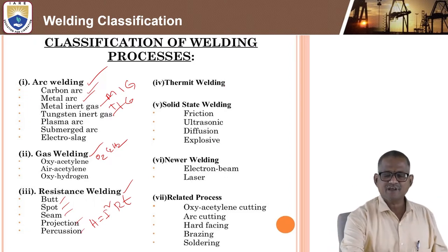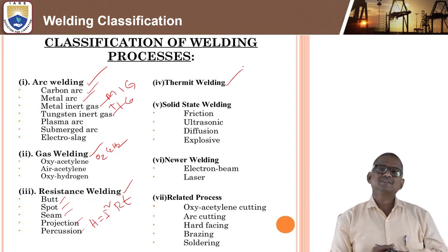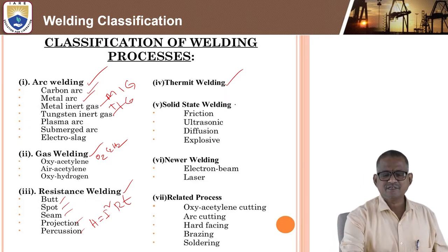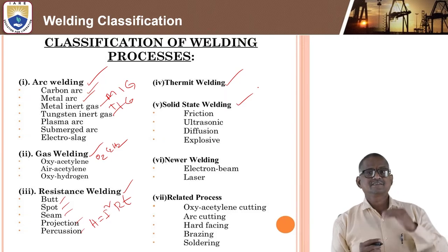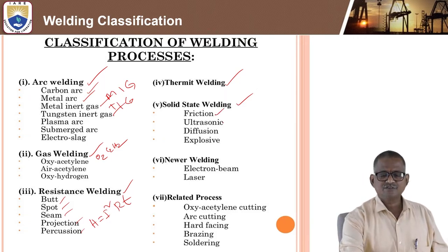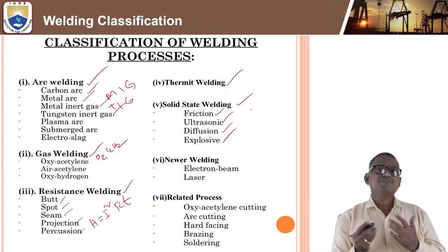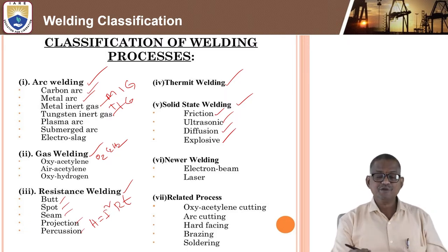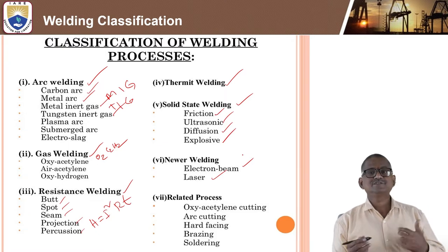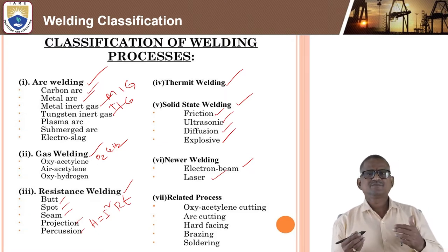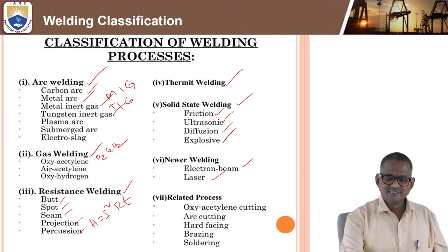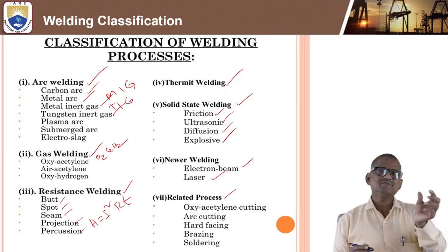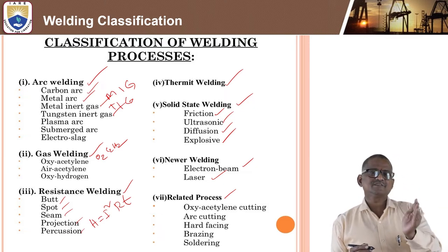Thermite welding is especially used for railway applications. Solid state welding is subdivided into friction welding, ultrasonic welding, diffusion welding, and explosive welding. Advanced welding processes include electron beam welding and laser welding, where specific techniques must be followed.